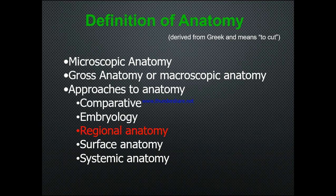The different types of anatomy include microscopic anatomy, gross anatomy or macroscopic anatomy. We also have different approaches: comparative anatomy, embryology, regional anatomy, surface anatomy, and systemic anatomy.